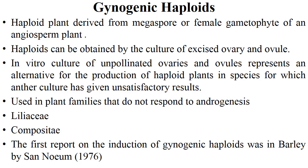Doubled haploids sometimes are not homozygous, leading to segregation in the progeny, which leads to non-uniformity or heterozygosity in the population. Coming to gynogenic haploids. Gynogenesis is ovule or ovary culture to obtain haploids — defined as haploid plants derived from megaspore or female gametophyte of an angiosperm plant. Haploids can be obtained by culture of excised ovary and ovule. The first report on induction of gynogenic haploid was given in barley by San Noeum in 1976.